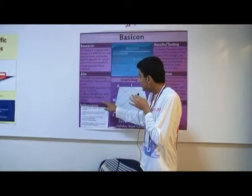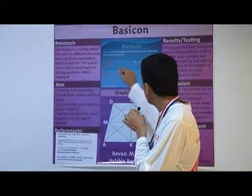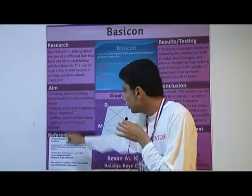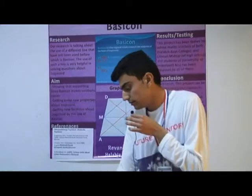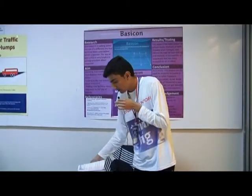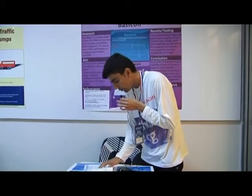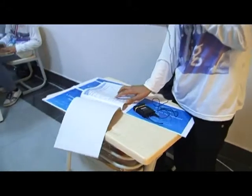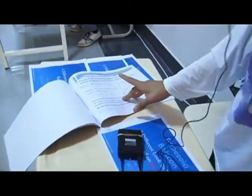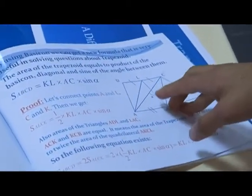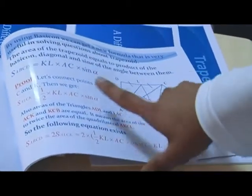The last advantage of using this line is obtaining new formulas about the trapezoid using the base gun. We have found that the area of the trapezoid equals the product of the base gun and one diagonal multiplied by the sine of the angle between them, and we can also prove this.